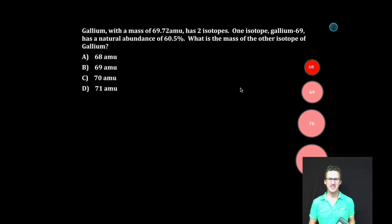Gallium, with a mass of 69.72 amu, has two isotopes. One isotope, gallium-69, has a natural abundance of 60.5%. What is the mass of the other isotope of gallium?